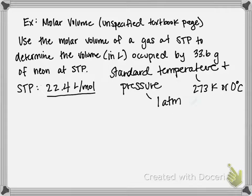The problem we're going to be looking at says to use the molar volume of a gas at STP — we have to specify STP, otherwise molar volume doesn't really apply — to determine the volume in liters occupied by 33.6 grams of neon.